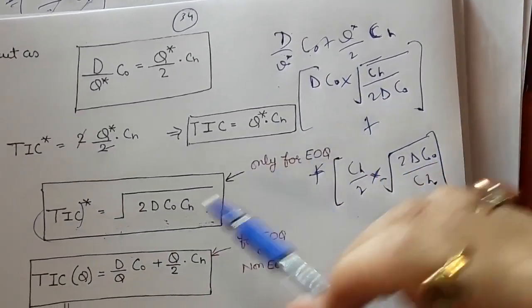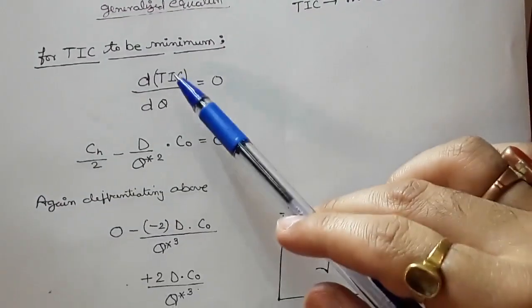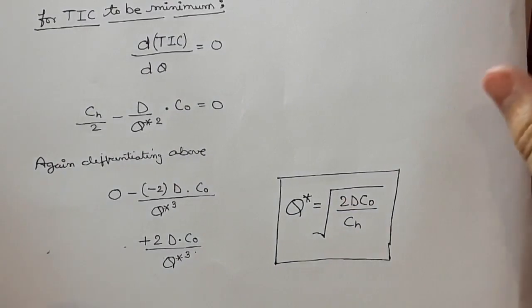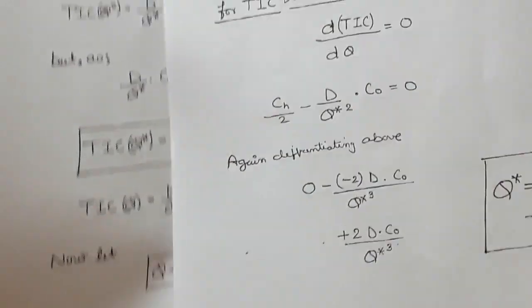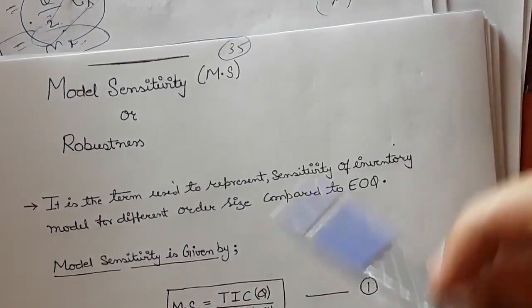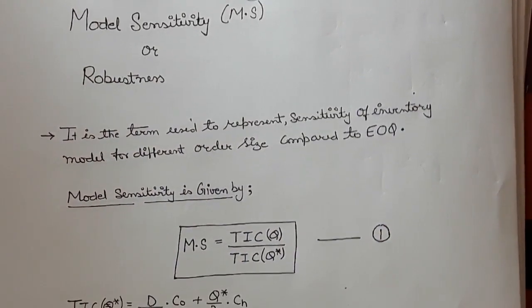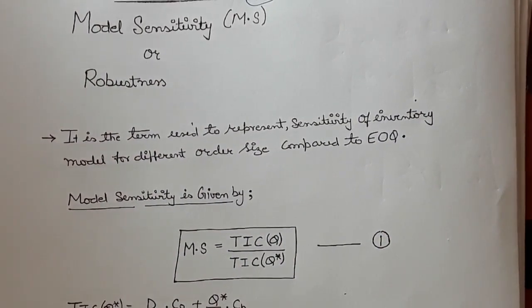Solve the expression yourself and you will get TIC* = √(2D·C₀·CH). We have seen both methods — differentiating and equating — and both give the same result. In the next video, we will understand model sensitivity. Thank you so much.